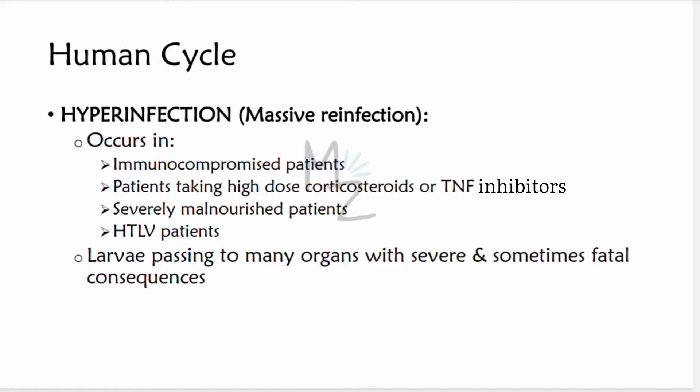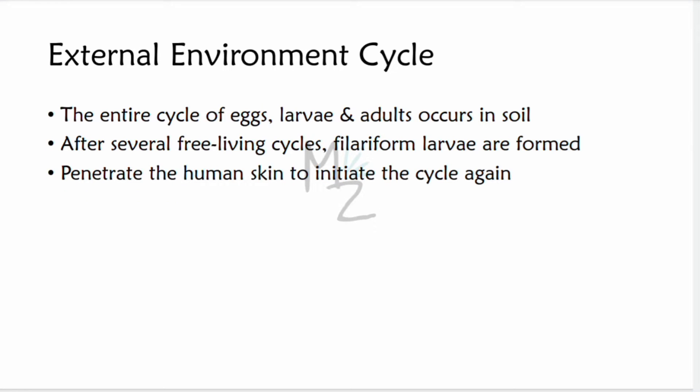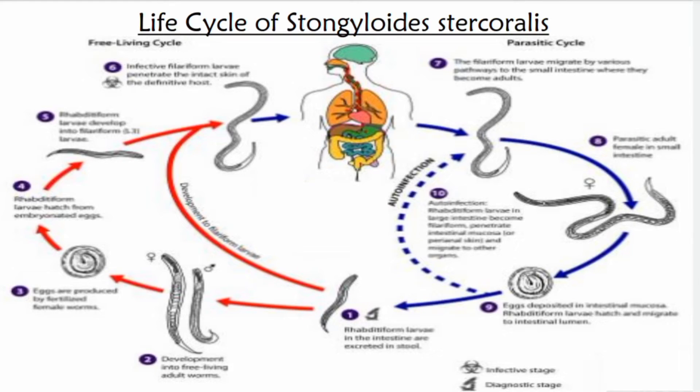When larvae are passed in feces and enter warm, moist soil, they develop through successive stages to form adult male and female worms. After mating, the entire life cycle of egg, larva, and adult can occur in the soil. After several free-living cycles, filariform larvae are formed. When they contact skin, they penetrate and again initiate the parasitic cycle within humans.